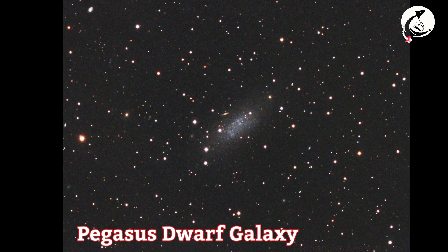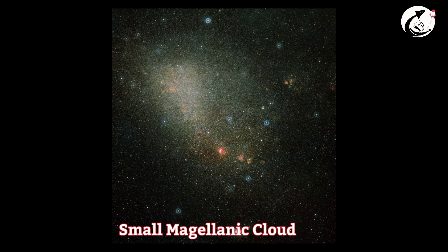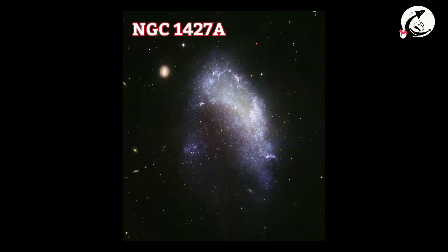Some of the examples of irregular galaxies are: Pegasus Dwarf, Tucana Dwarf, Small Magellanic Cloud, NGC 1427A. Besides these galaxies, there are other types of galaxies as well. They are barred spiral, lenticular, and peculiar. Some of the examples of these galaxies are mentioned here.